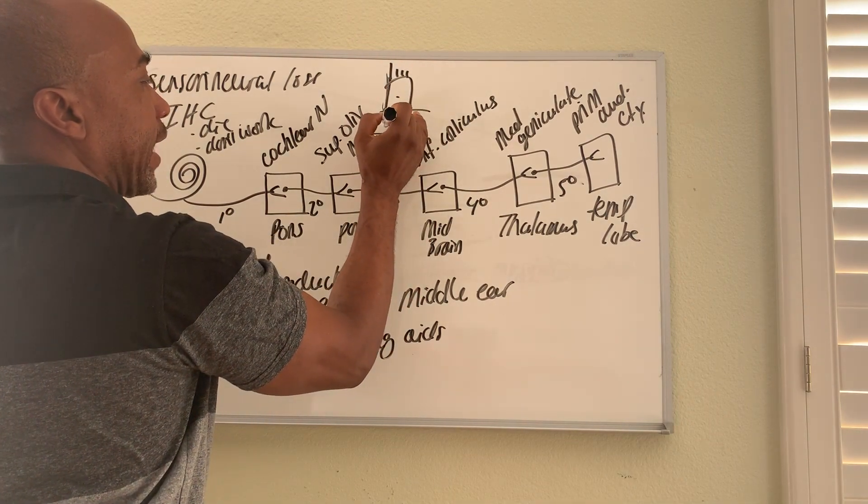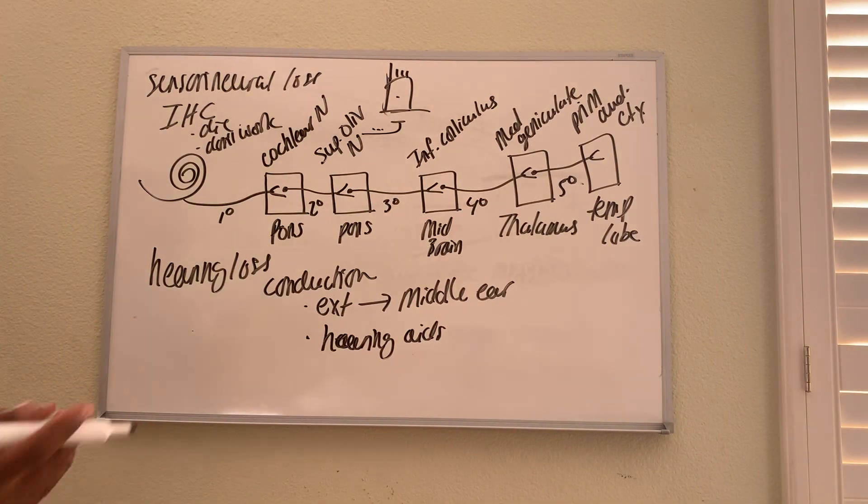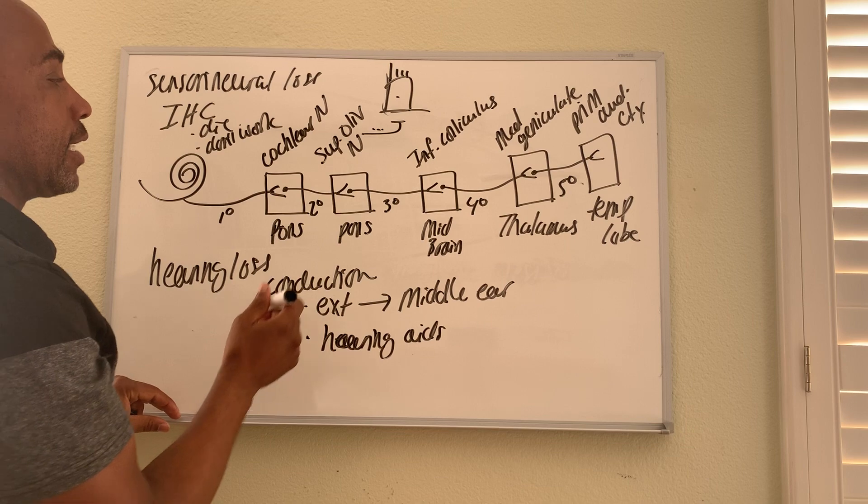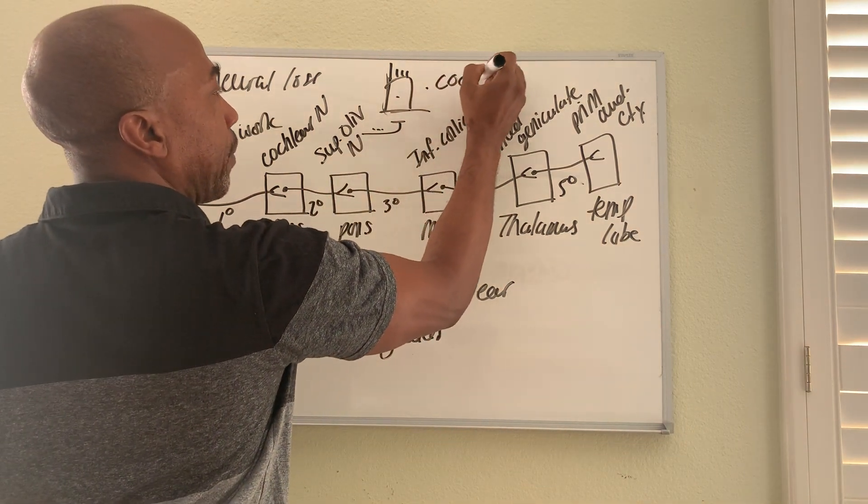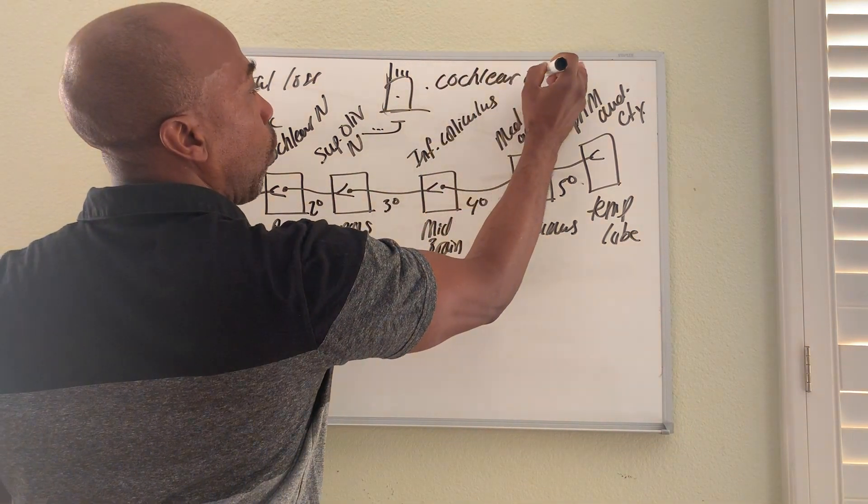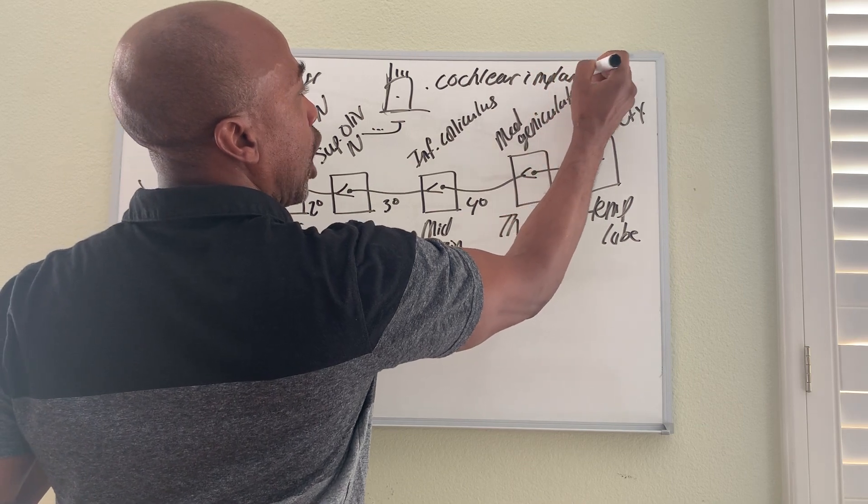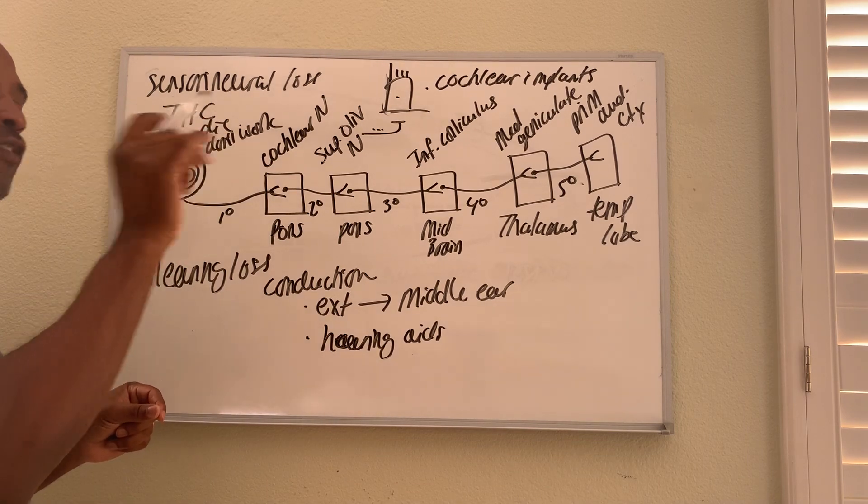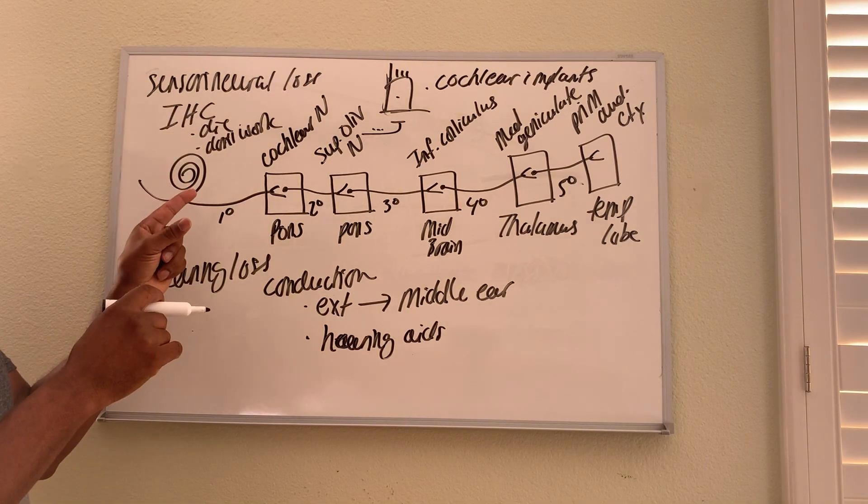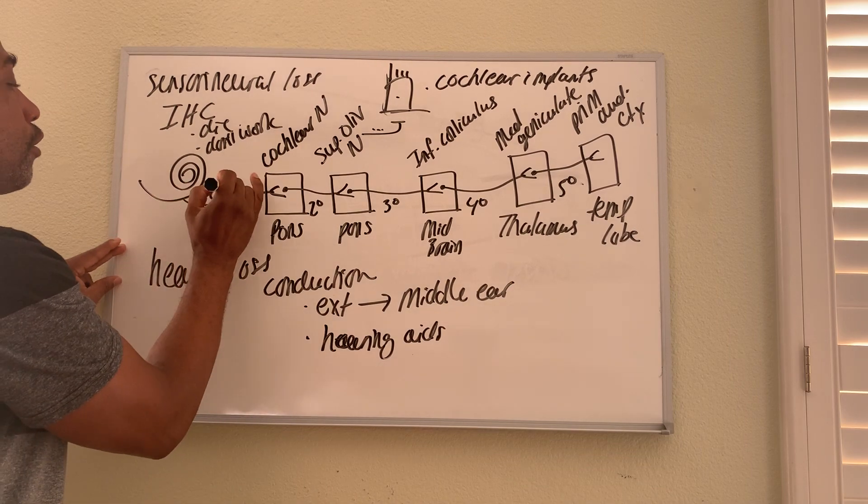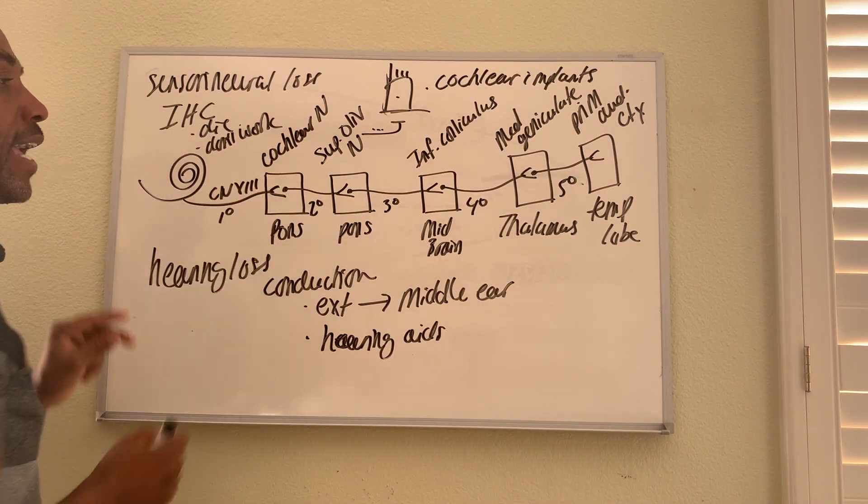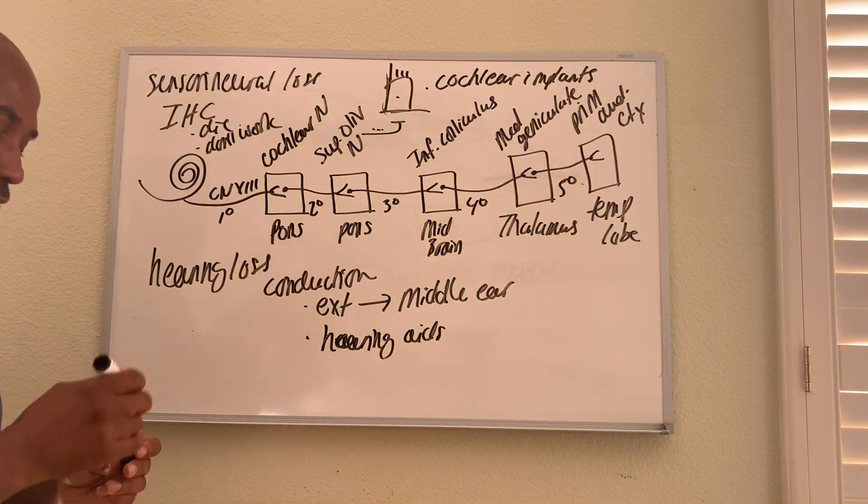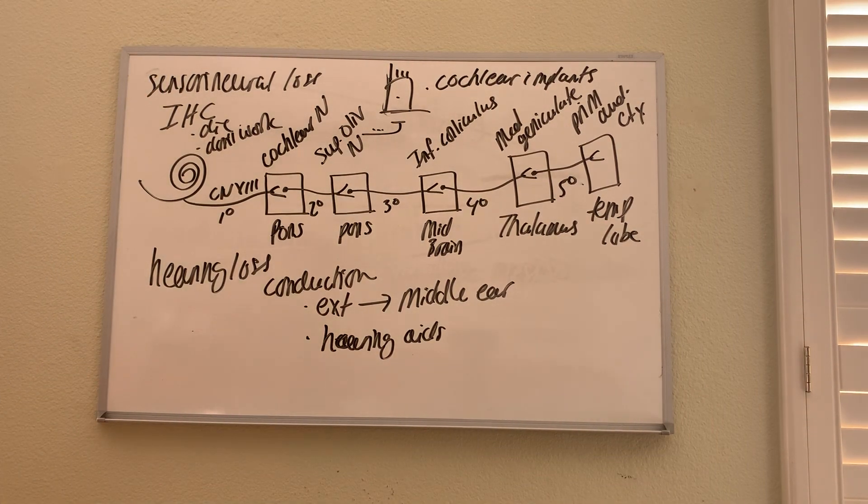So one way to address the sensorineural loss is by the use of what's called cochlear implants, where doctors will put electrodes directly into the cochlea to deliver pulses to the inner hair cells or actually to your cranial nerve number eight on the way out to create sounds for you. So okay, that's it for here.